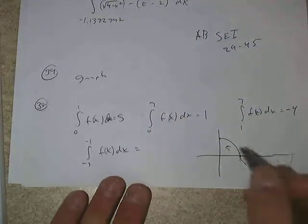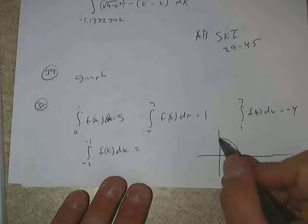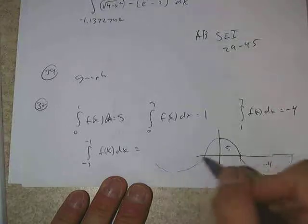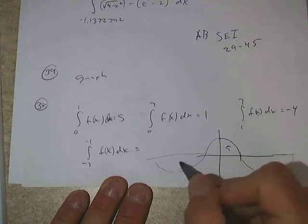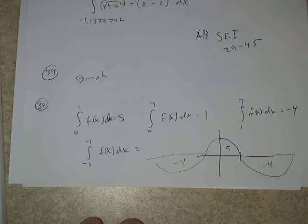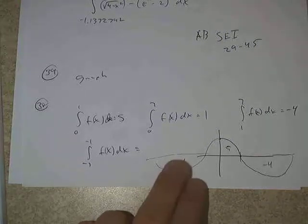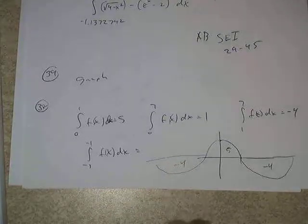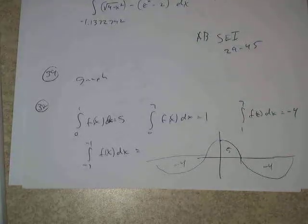So if the area from 1 to 7 of f(x) dx is negative 4, what does that tell us? Knowing that this is an even function — even functions are symmetric about the y-axis — ultimately the area from negative 7 to negative 1 would also have to be negative 4. So the answer should be letter B.